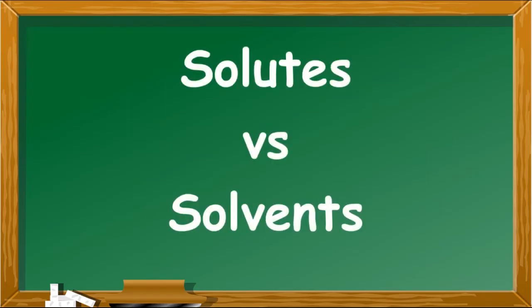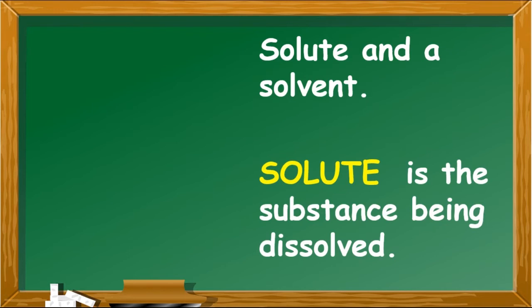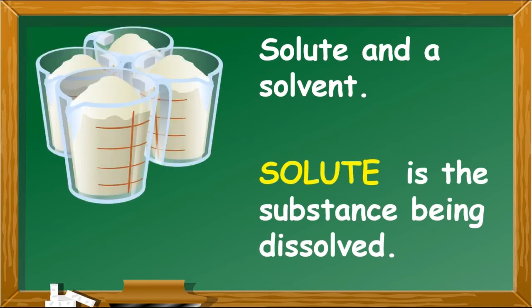Solute versus solvents. A solution is made up of a solute and a solvent. Solute is the substance being dissolved. Examples include salt, sugar, coffee powder, and juice powder.